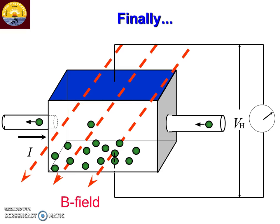Defining the Hall effect: when a current-carrying semiconductor is placed in a transverse magnetic field, a potential difference is developed perpendicular to both the direction of current and the magnetic field. That potential is called the Hall potential. If the Hall potential shows a positive signal, that indicates P-type; if it shows a negative signal, that indicates N-type material.